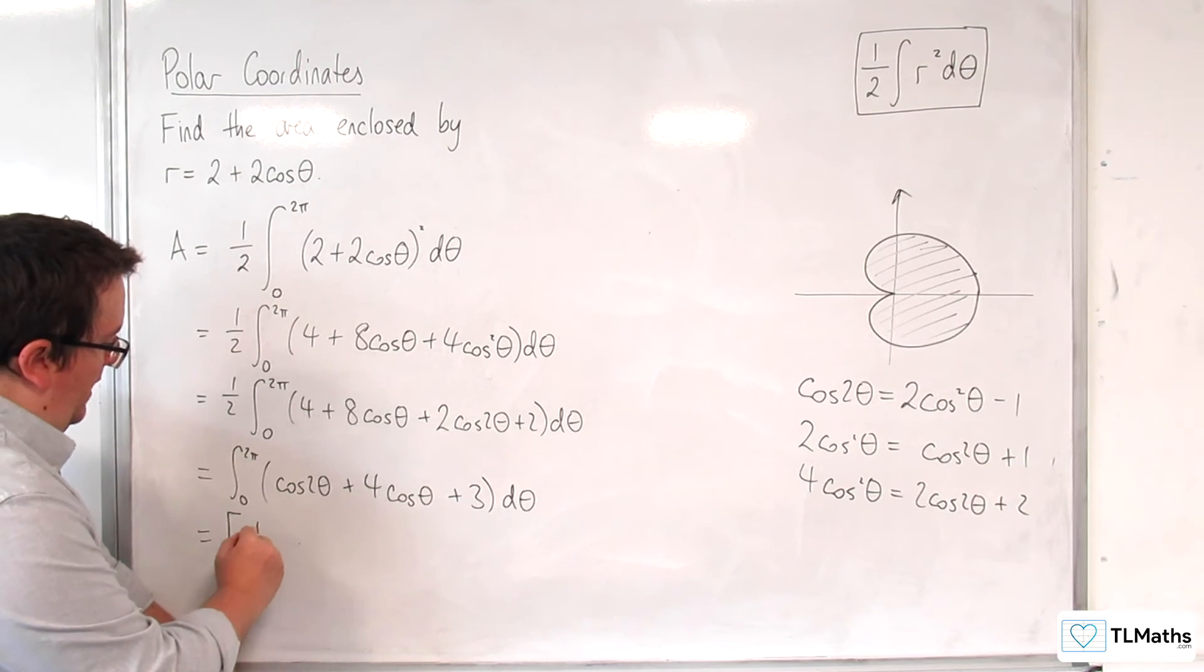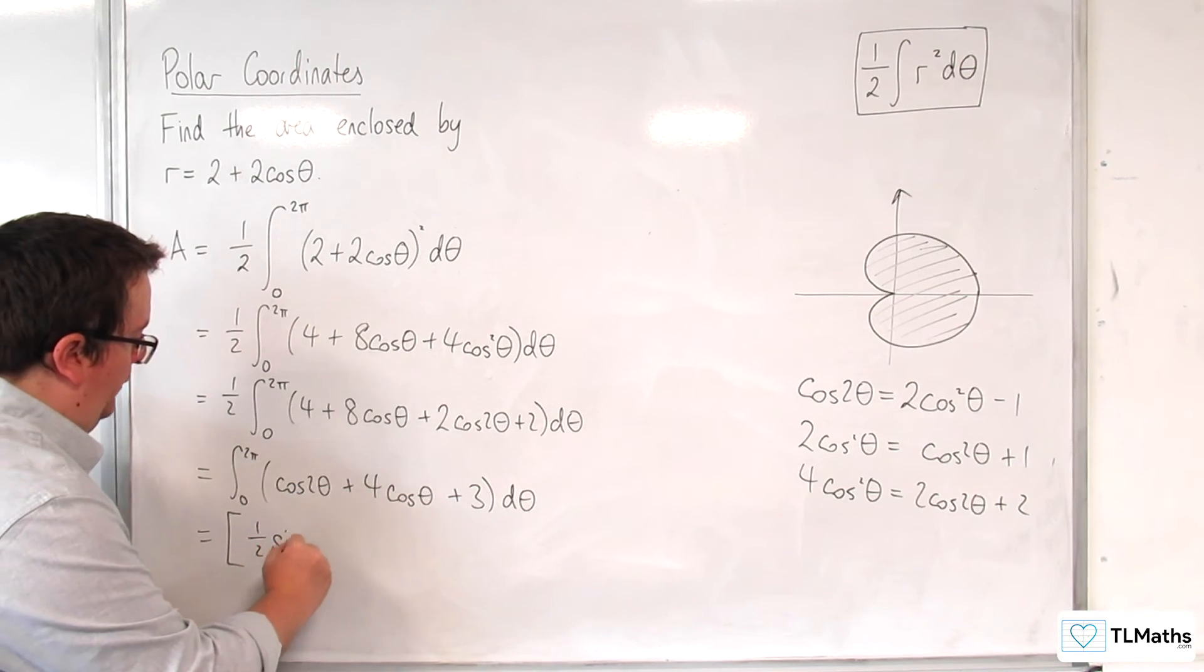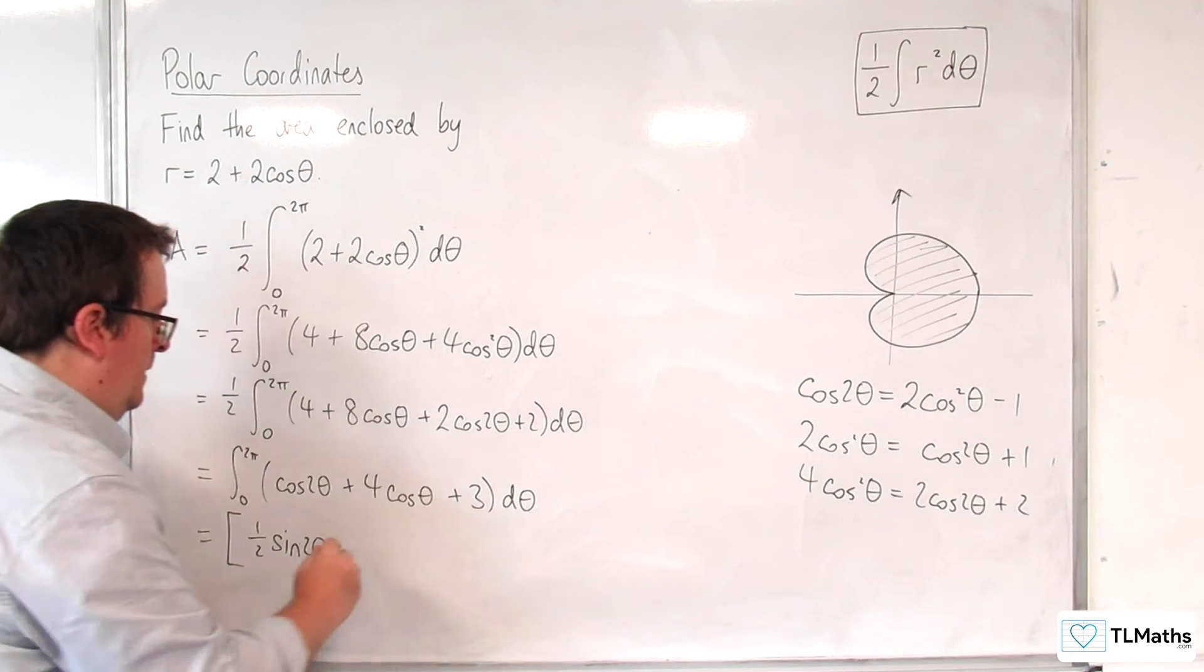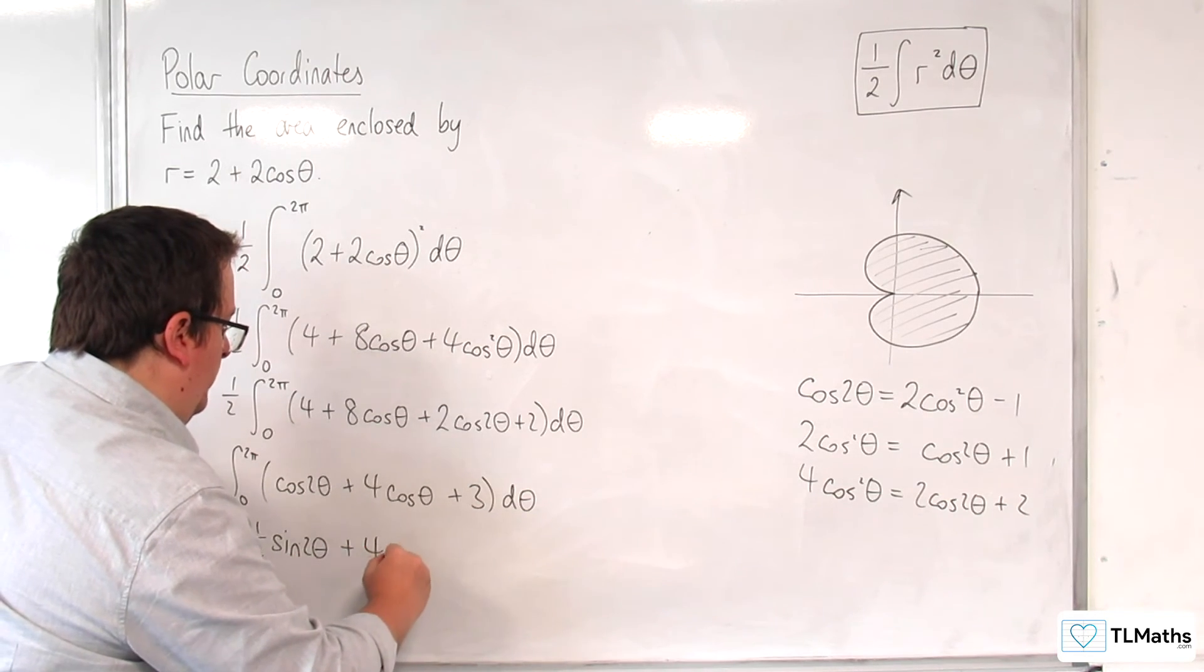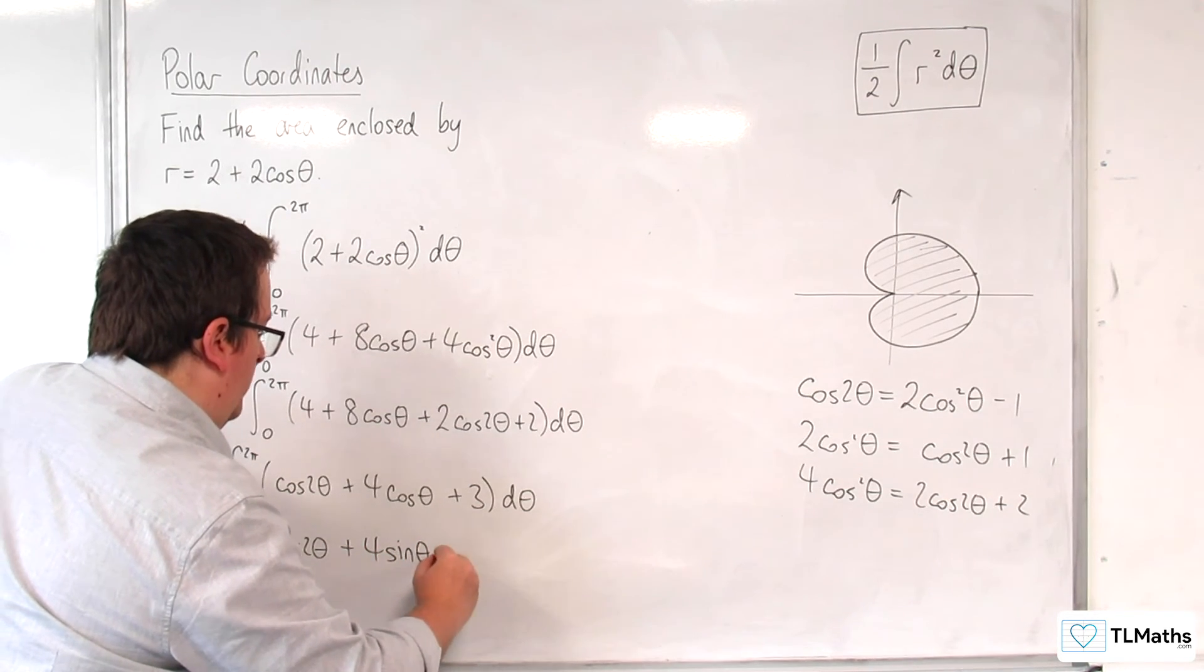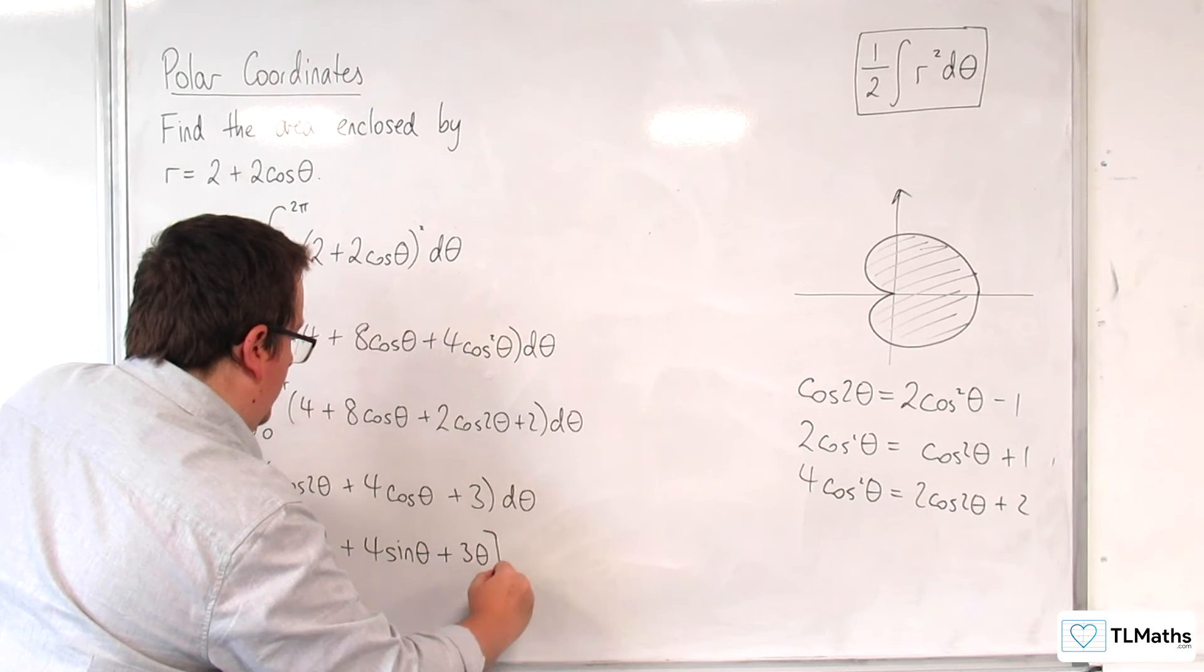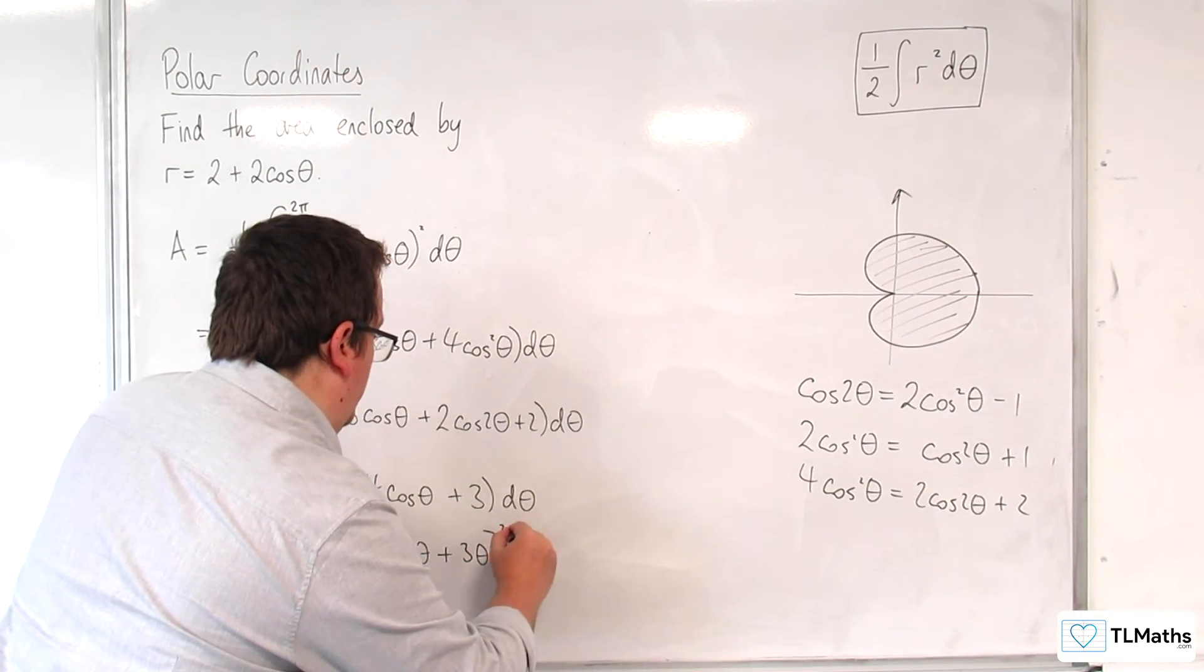So let's integrate this. So we would have 1 half sine 2 theta plus 4 sine theta plus 3 theta evaluated between 0 and 2 pi.